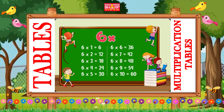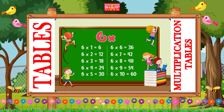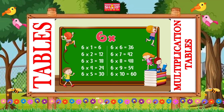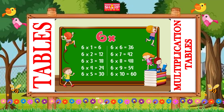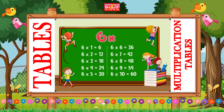Six fives are thirty, six sixes are thirty-six, six sevens are forty-two, six eights are forty-eight, six nines are fifty-four, six tens are sixty.